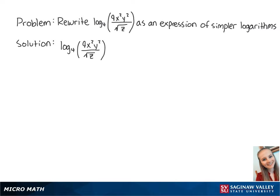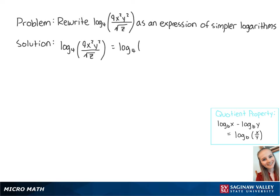First, we can see that there is division within the logarithm, so we can use the quotient property to rewrite this as the log base 4 of 9x squared y squared minus the log base 4 of the square root of z.